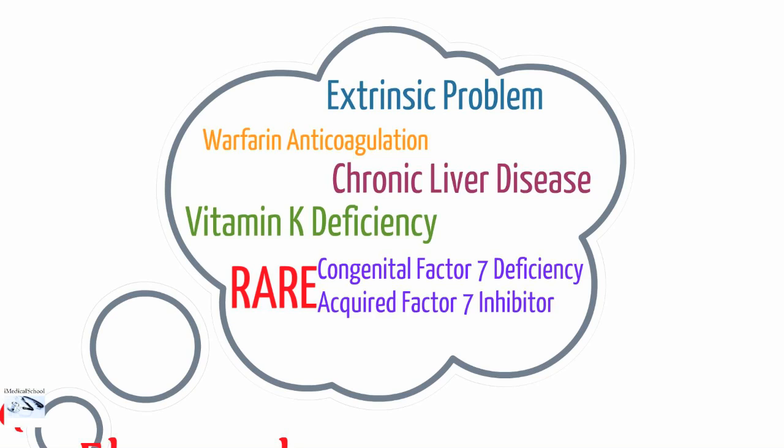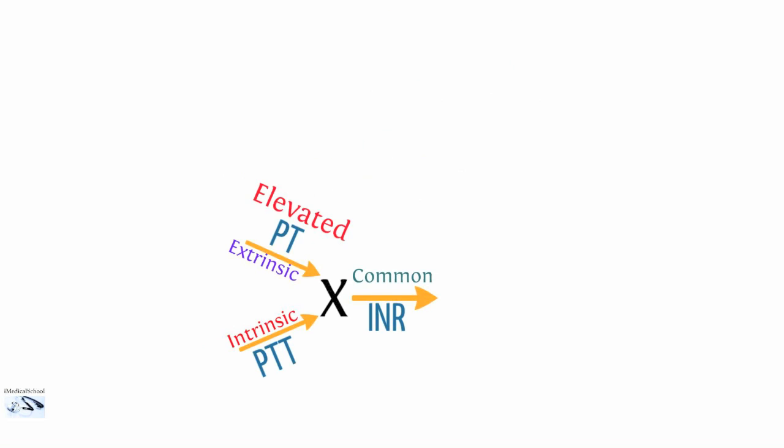Chronic liver disease leads to the same problem — without functional liver cells to make these factors and utilize vitamin K, you can't create the factors. So warfarin anticoagulation, chronic liver disease, and vitamin K deficiency all share a common etiology: the lack of utilization or production of vitamin K-dependent factors that causes the extrinsic pathway problem. Rare cases of congenital factor VII deficiency and acquired factor VII inhibitor can also cause this pattern, but they are extremely rare.